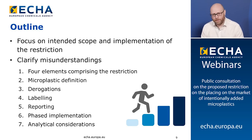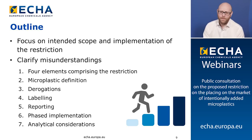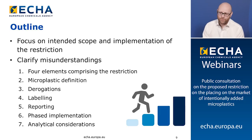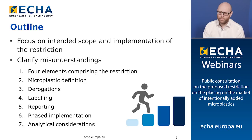I'll go through a few elements: first, the four elements that comprise the restriction; then the microplastic definition underpinning the restriction; derogations from the scope and how they're intended to be interpreted; mandatory labeling and reporting requirements; phased implementation with different sectors coming in at different periods after entry into force; and briefly, some analytical considerations.